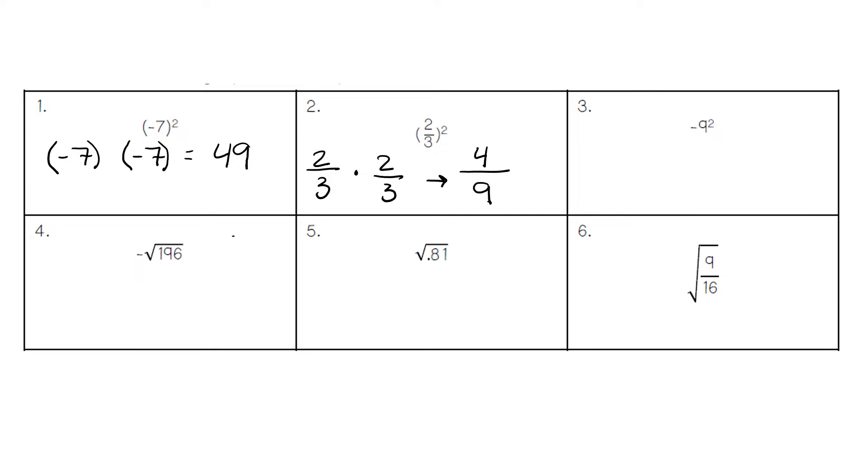Notice the difference between number three versus number one. Number three does not have parentheses, whereas number one does. Two negatives make a positive when we have parentheses around our base number negative seven. We do not have parentheses in number three, so we keep the negative in our answer.